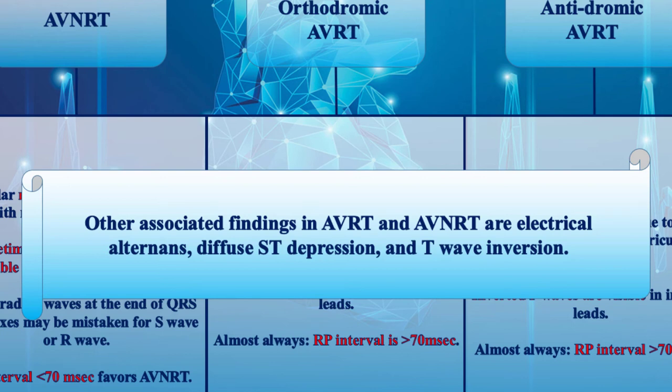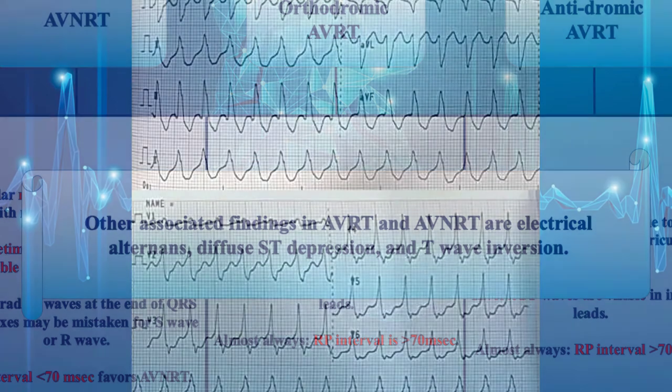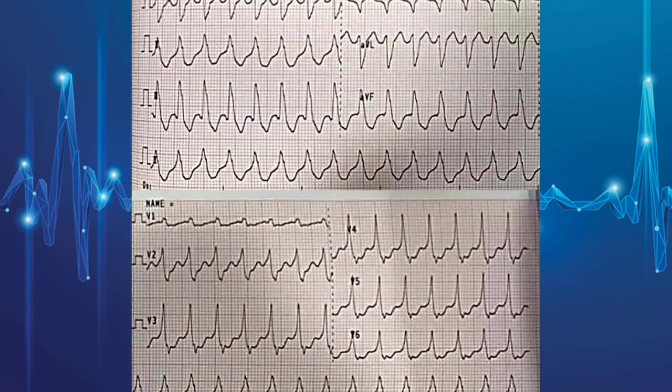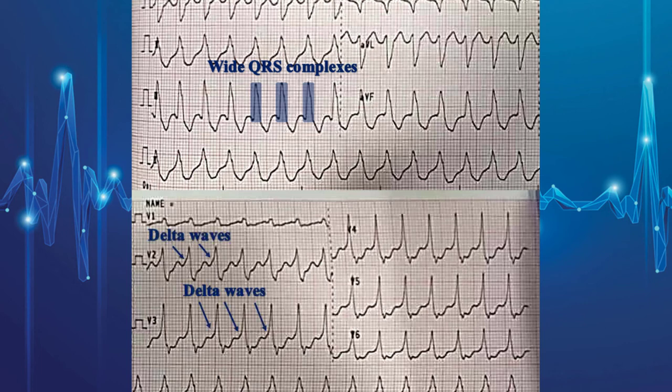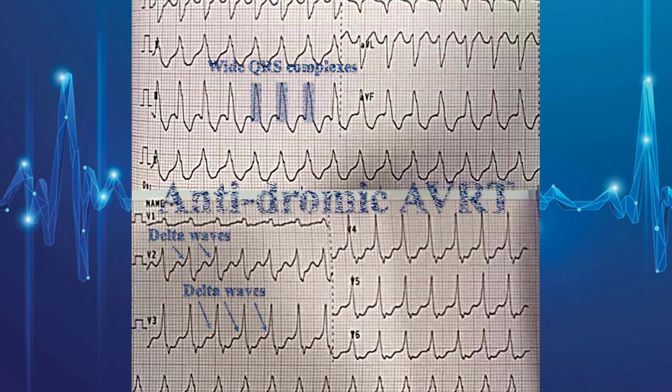This strip illustrates antidromic AVRT. There is regular wide-complex tachycardia with retrograde P-waves superimposed on the ST segment. In addition, there are obvious delta waves in V2 to V4 and D2. So the arrhythmia is antidromic AVRT.